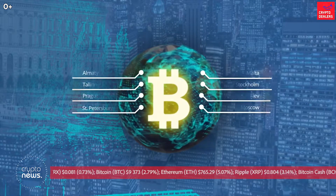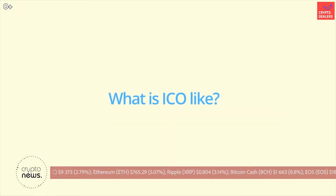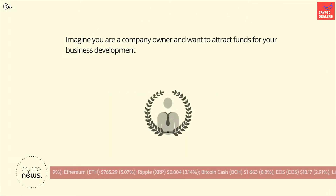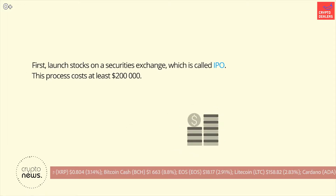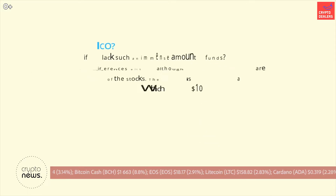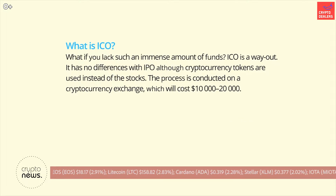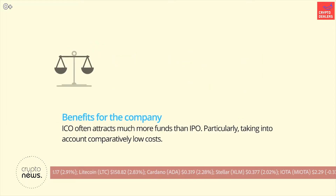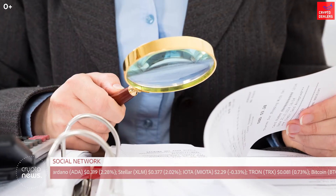The third criterion is the structure of the ICO. According to the rules of initial placement, part of the tokens remain with the founders — typically around 25% of coins issued. If the project has too many founders and token holders, be very careful. Also pay attention to hard cap and soft cap: the hard cap is the upper limit of funds required for the team to implement their plans, while the soft cap is the lower barrier. The collected funds should not exceed the hard cap but should reach the soft cap.